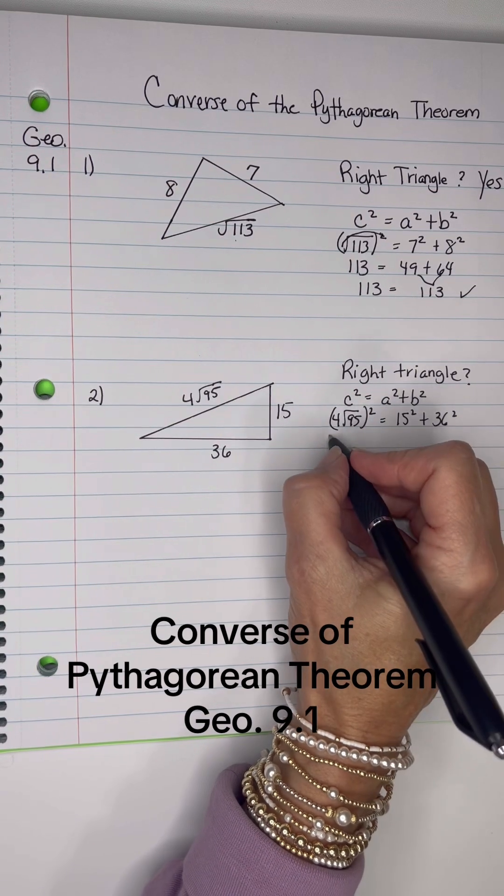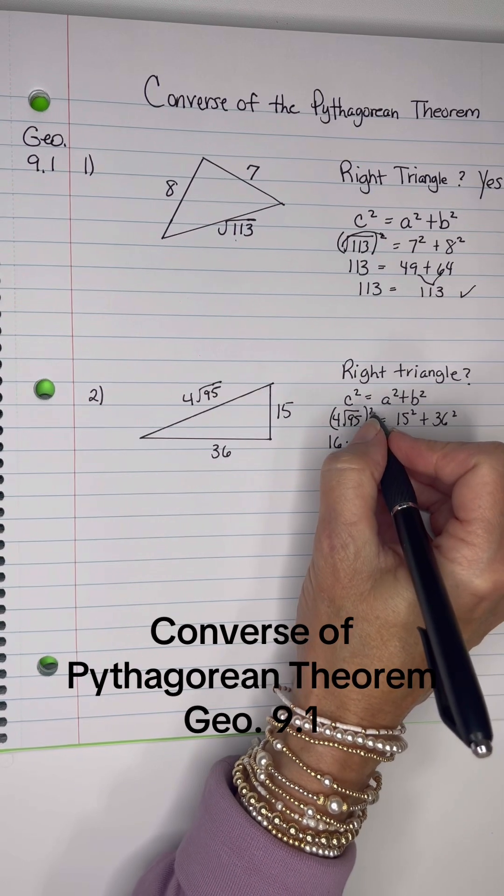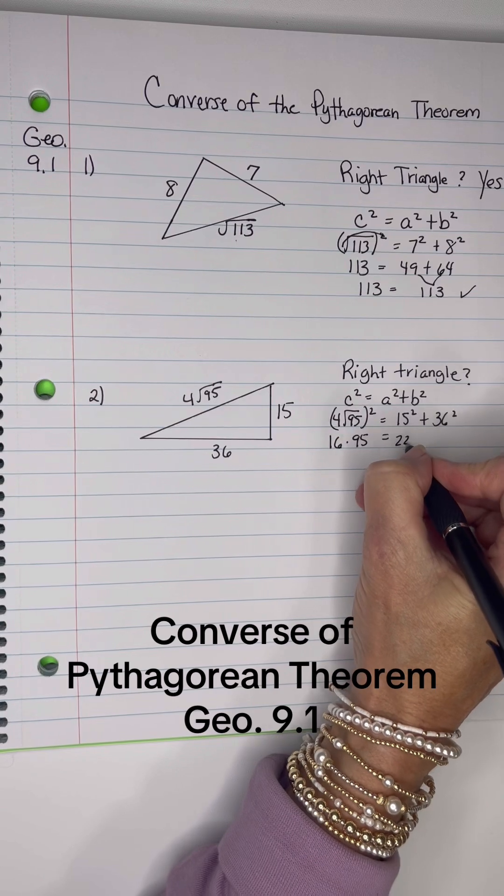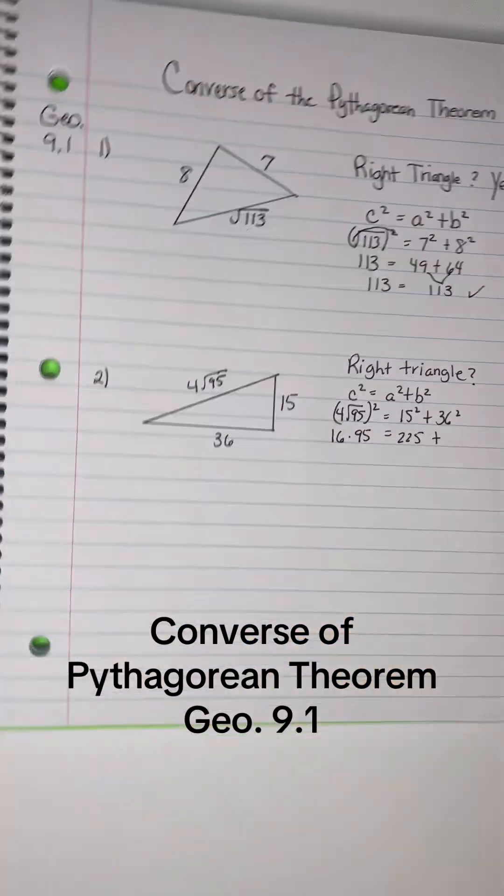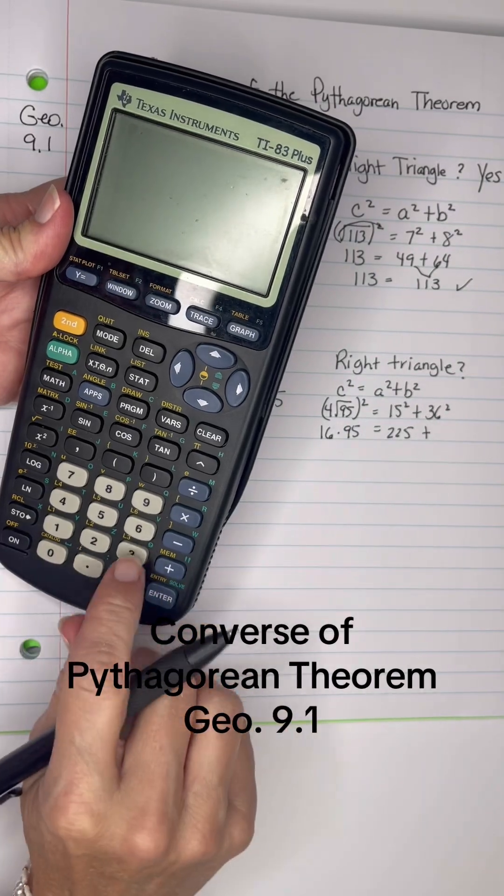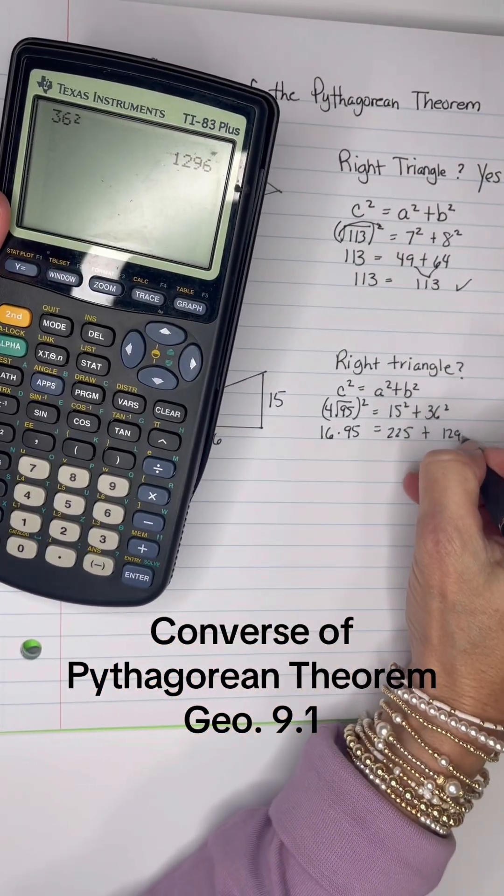4 squared will be 16, and then it affects the square root of 95, which will be, the square cancels the square root out, I'll have 16 times 95. 15 squared is 225. I don't know 36 squared, so I'm going to have to go find it. 36 squared is 1,296.